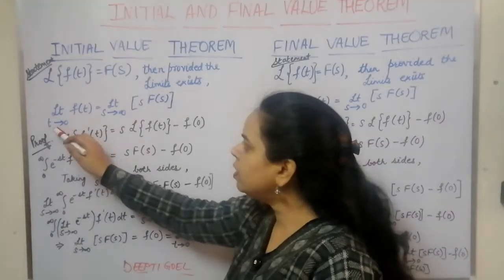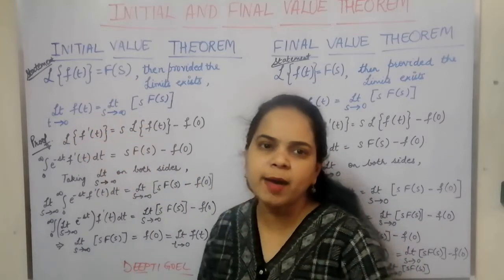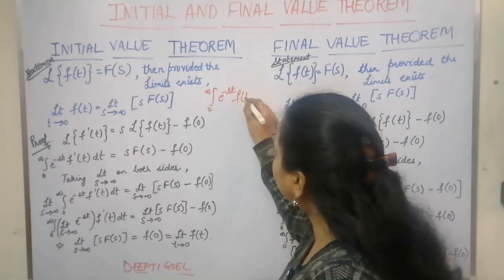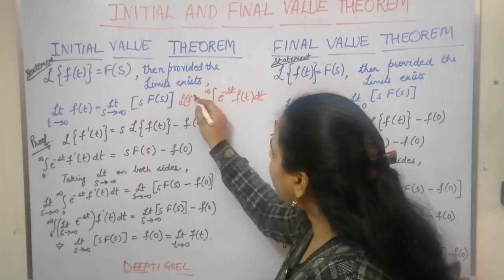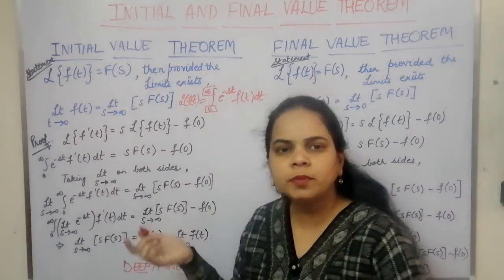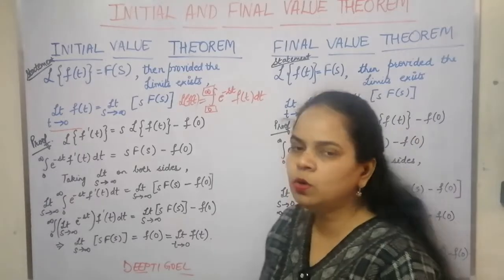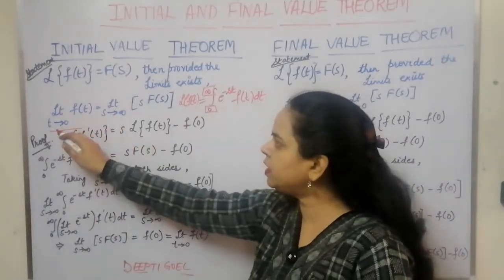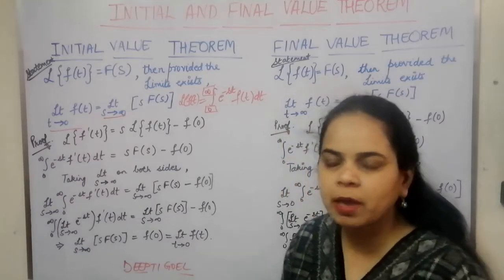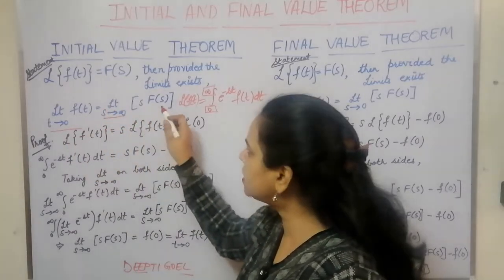For the initial value theorem, we have the limit t tending to 0 as the initial condition. In the definition of the Laplace transform, we have the integral from 0 to infinity of e^(−st)·f(t) dt. Since the lower limit is 0 and the upper limit is infinity, we define the initial and final values from these limits. For the initial value theorem, t tends to 0 and s tends to infinity, giving us s·F(s).